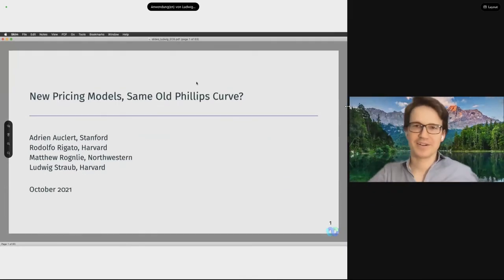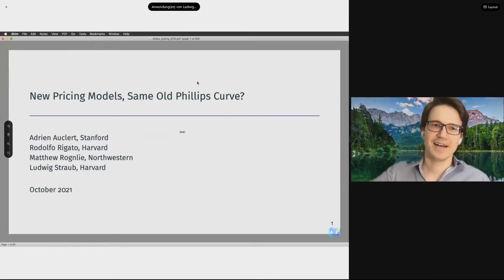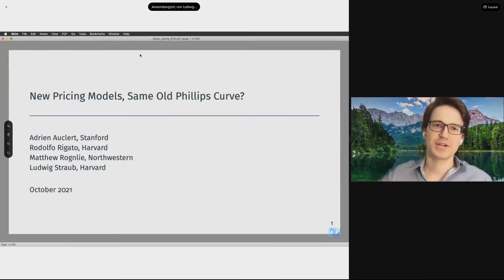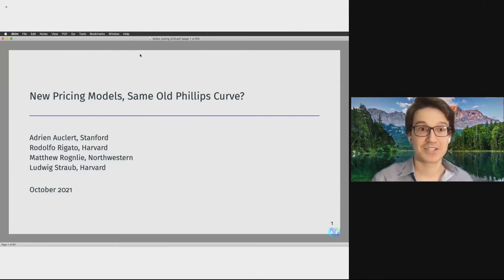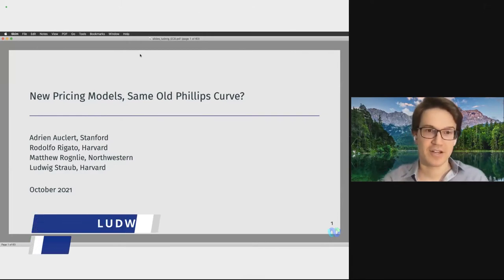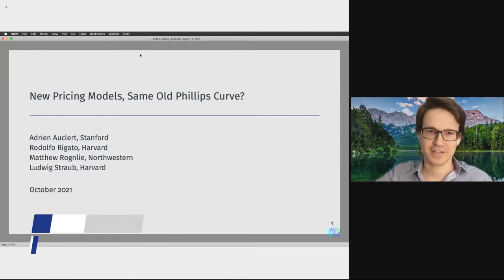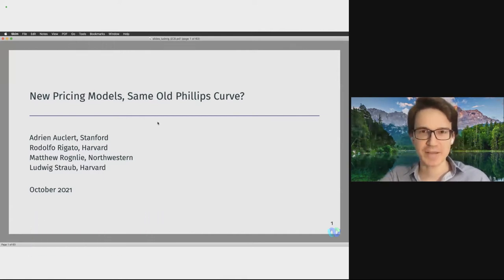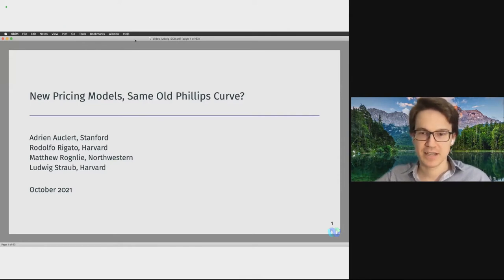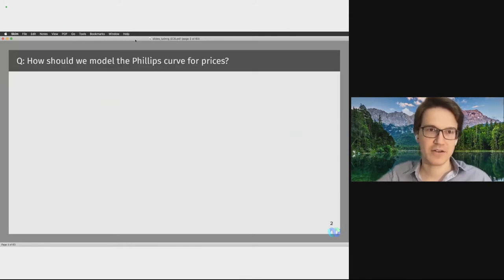Thank you very much for putting our paper on the program. This paper is called 'New Pricing Models, Same Old Phillips Curve.' It's joint work with Adrian Eau Claire, Rodolfo Rigato, who is a fantastic grad student here at Harvard, and Matt Ronley. The starting point for this project is a very basic question in monetary economics: how should we model the Phillips Curve for prices?